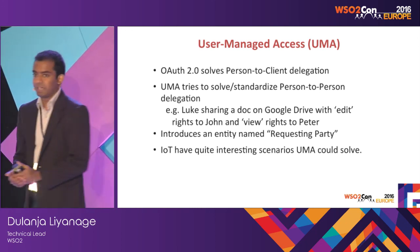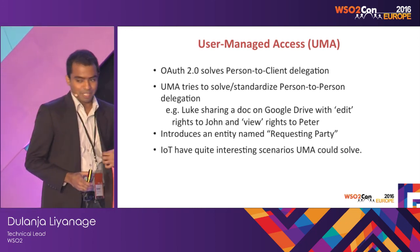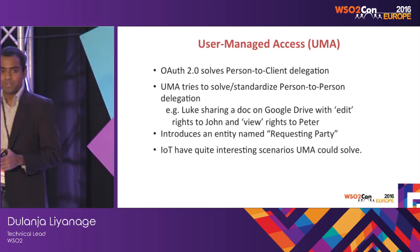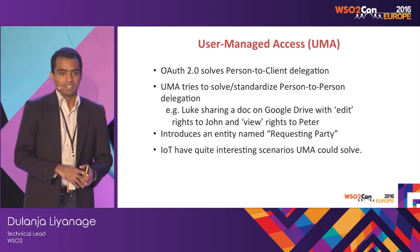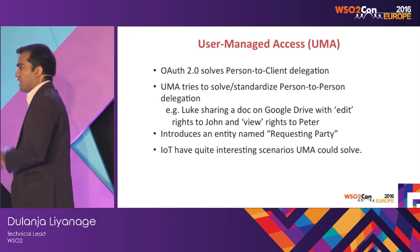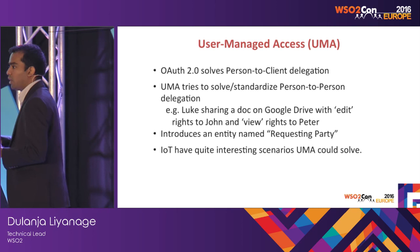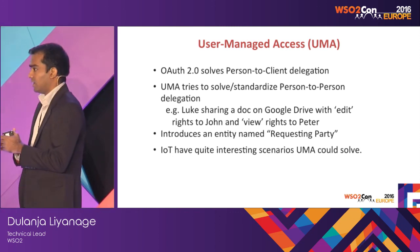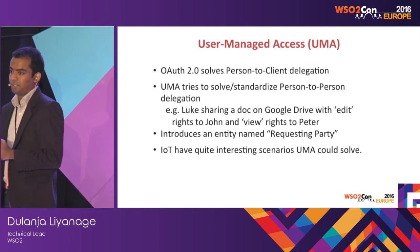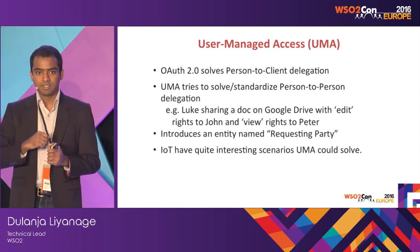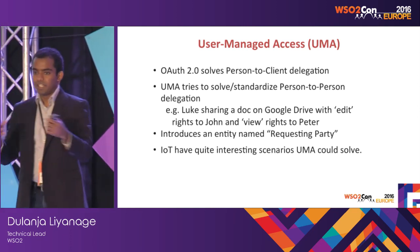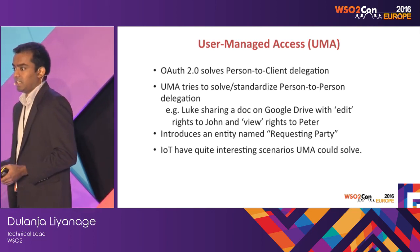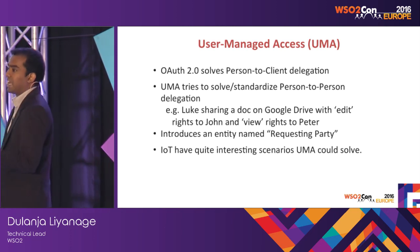Coming to another interesting topic called User-Managed Access (UMA). OAuth tried to solve the problem where a client tries to access an API on behalf of a user. UMA tries to solve the problem where a person delegates to another person — previously it was a person delegating to a client app. A simple example is Google Drive, where you can create a document and give view access to one person and edit access to another. That's a proprietary mechanism; UMA is trying to standardize that.